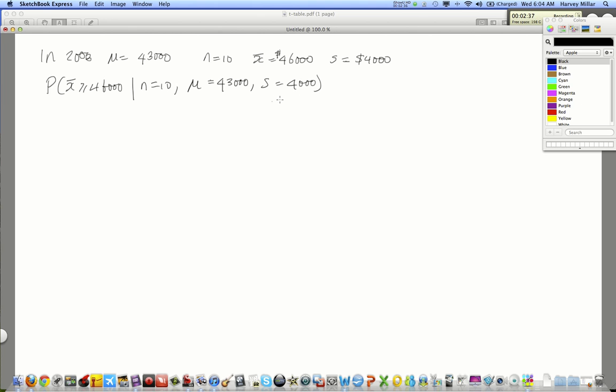Now, if you notice, sigma is unknown, also, n is less than 30, is 10, so that should tell us right away that we should consider using the t-distribution. So, we'd have to make a number of assumptions. What are some of those assumptions?